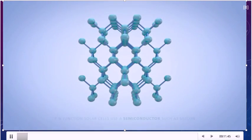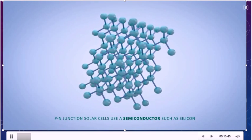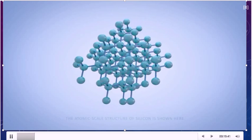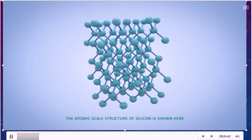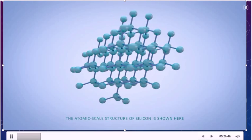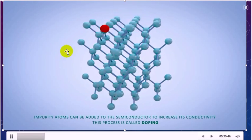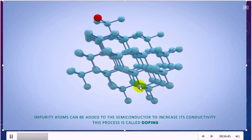PN junction solar cells use semiconductors such as silicon. This is the lattice of silicon. The atomic scale structure of silicon is shown here. Impurity atoms can be added to the semiconductor to increase its conductivity. This process is called doping.